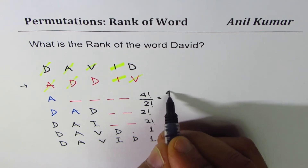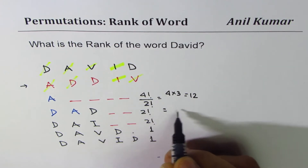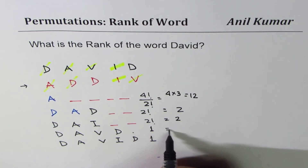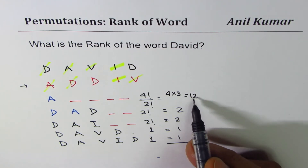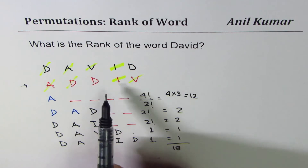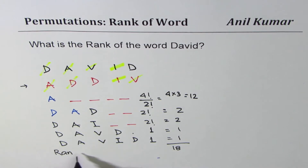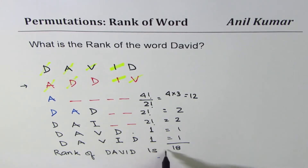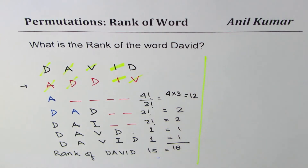4 factorial divided by 2 is 4 times 3 which is 12; 2 factorial is 2; the others are 2, 1, and 1. Adding them all: 12, 13, 14, 15, 16, 17, 18. Since DAVID appears in the eighteenth position from all the combinations of words which can be formed by the letters D-A-V-I-D, the rank of DAVID is 18.